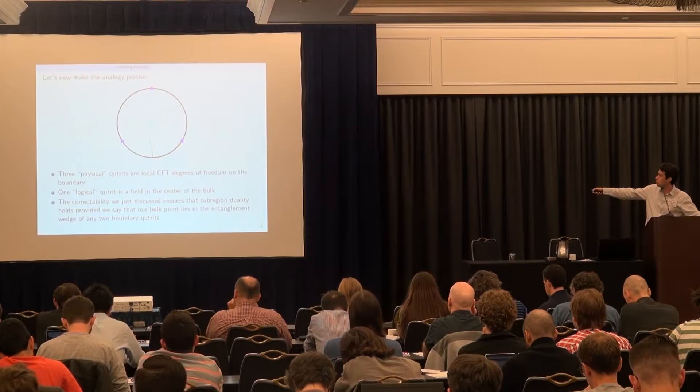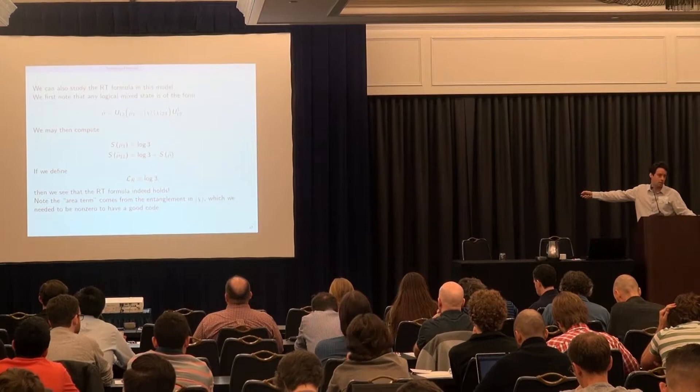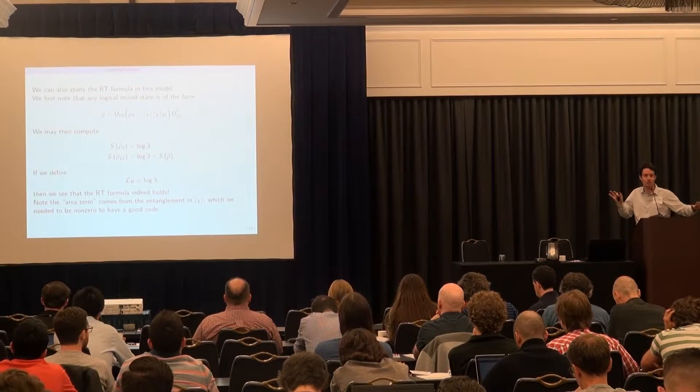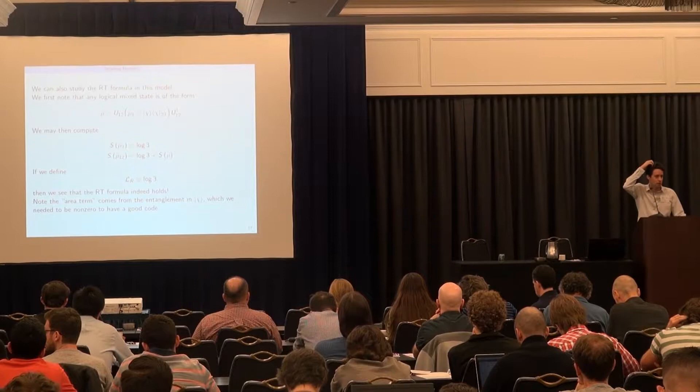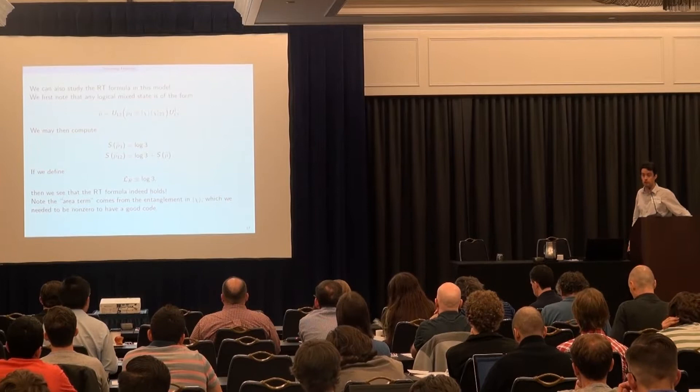So: the entropy equals the area plus the entropy of the stuff inside. When we computed just the third qutrit, we got just the area piece — nothing inside. When we computed two qutrits, we got the area piece plus the entropy of the blue dot. The area term comes from the entanglement in chi — had chi been a product state, there wouldn't have been an area term. The Ryu-Takayanagi formula holds exactly with no corrections in this simple example.